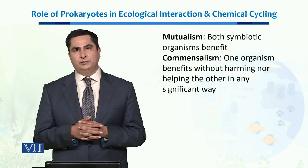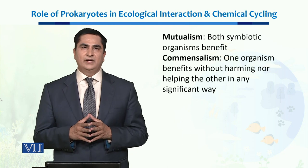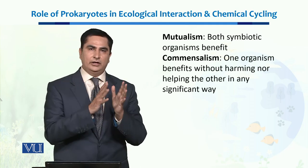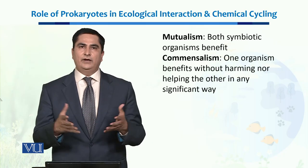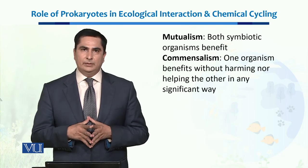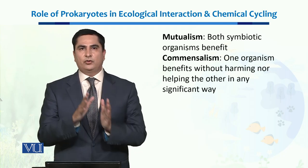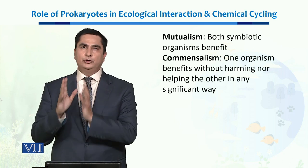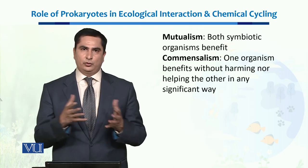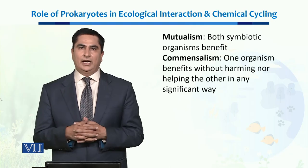Mutualism is a symbiotic relationship between a prokaryote and another organism in which the prokaryote helps that larger organism in some way and that larger organism also in return helps those prokaryotes. So this is a relationship in which both get benefits. Commensalism, on the other hand, is a symbiotic relationship in which prokaryotes provide useful nutrients or support to the larger organism, and in return the larger organism does not provide any assistance to the prokaryotes — one organism benefits without harming the other.